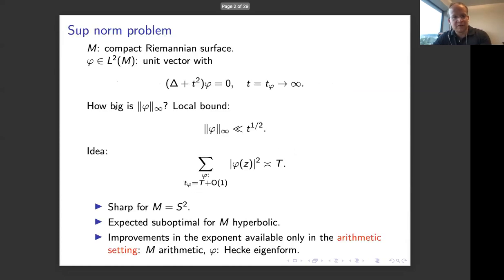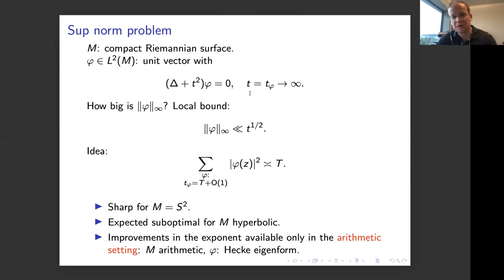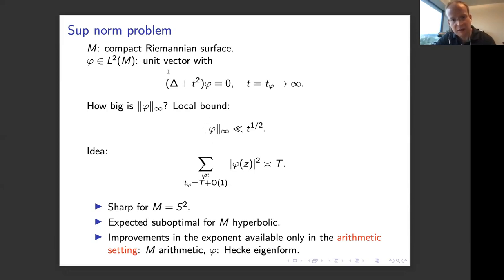We'll begin by recalling some background on the supernorm problem. To keep things concrete, we'll take M to be a compact Riemannian surface, then let phi be an L2-normalized Laplace eigenfunction on that surface, and think about what happens when the eigenvalue tends to infinity. This is a problem in quantum chaos or semi-classical analysis of understanding how large such eigenfunctions can be. There's something called the local bound.